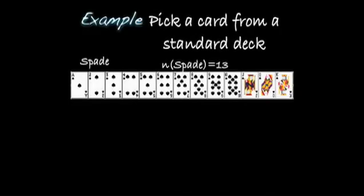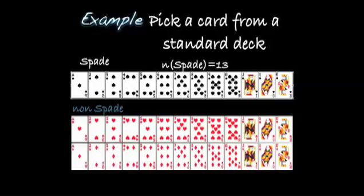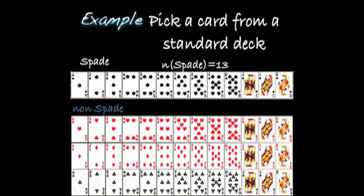The event of picking a spade: there are 13 spades in a deck of cards — the ace of spades, two of spades up to the ten of spades, the jack, the queen, and the king of spades. The complement of a spade is a non-spade — all the cards that are not spades: the hearts, the diamonds, and the clubs. If there are 52 cards in a deck, 13 of which are spades, that means there are 39 non-spades.